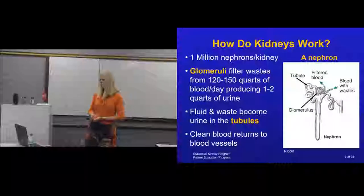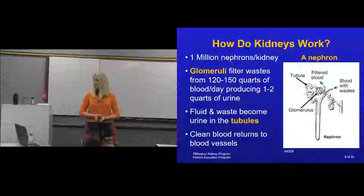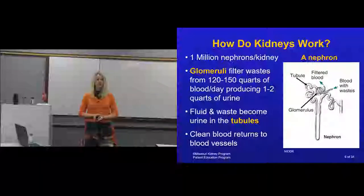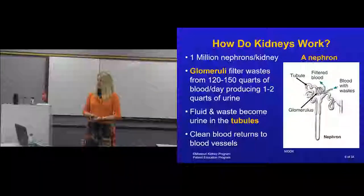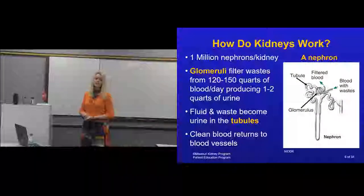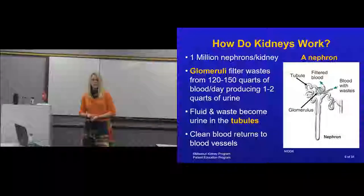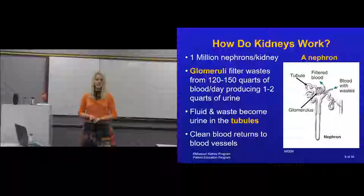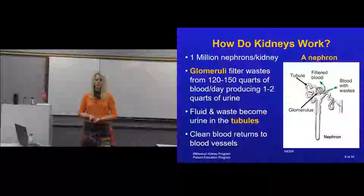Here's a picture of those nephrons housed in the glomerulus. The tubule is where the urine is produced, and then the clean blood is returned back through your blood vessels. If you've ever heard the term creatinine, that's a measure of blood waste produced by your muscles. Everybody's muscles produce it, and the kidney's job is to excrete it. When we do a blood test, if that level is elevated, it tells us your kidneys are not doing a good job getting rid of that muscle waste.